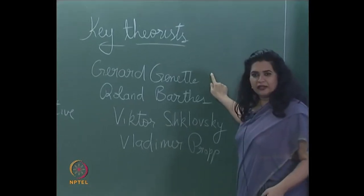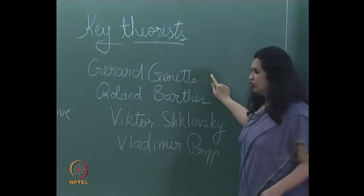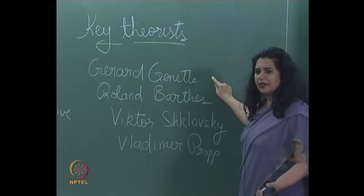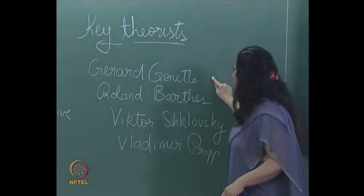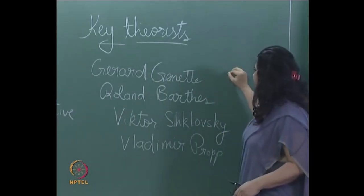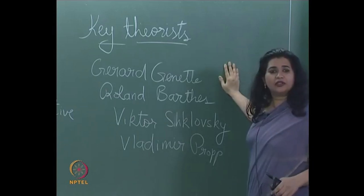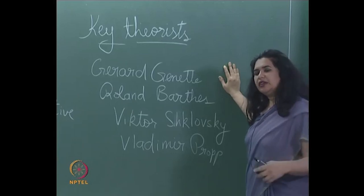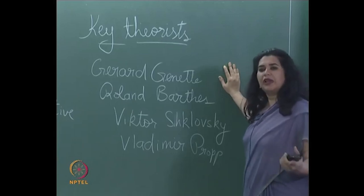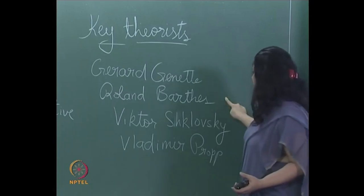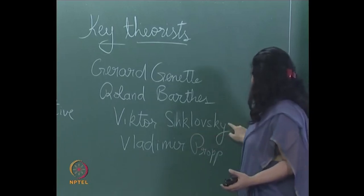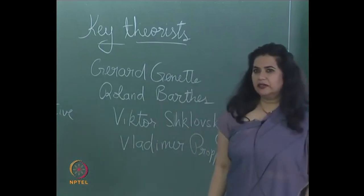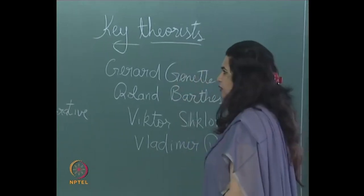Key theorists we will look at: Gerard Genette, a French theorist who is a formidable influence on narrative. These theories basically focus on literary theories, but we are going to see how literary theories can be applied to cinematic theories as well. Roland Barthes, Victor Shklovsky, and Vladimir Propp — these are the theorists we will be looking at in detail today.